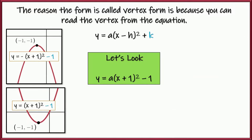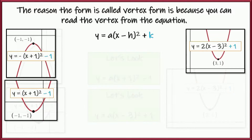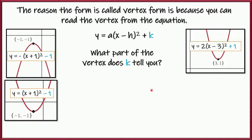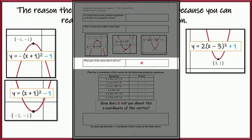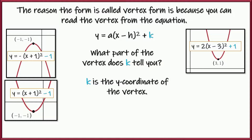The k value is really key. K tells you the y-coordinate of the vertex. Negative 1, negative 1, negative 1 — K is negative 1 and the y-coordinate of the vertex is negative 1. In vertex form y equals A times quantity x minus h squared plus k, K is the y-coordinate of the vertex. In your guided notes there's a spot to record this: k gives you the y-coordinate of the vertex.